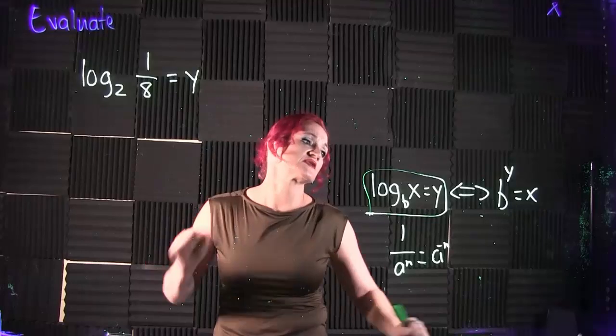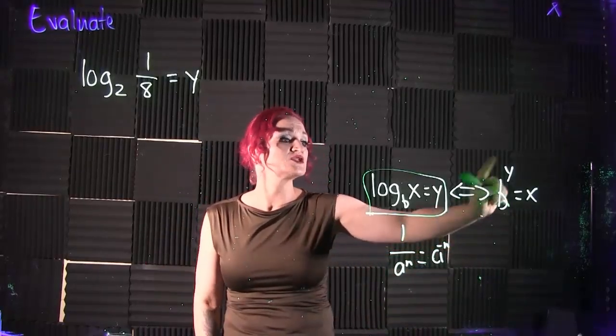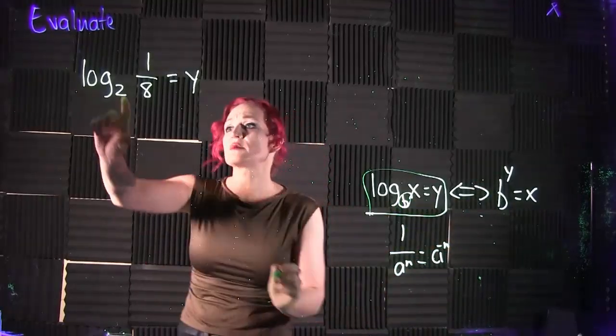So you want to take this and rewrite it as b to the y. Now, b is your little number here, your base, so that's our 2.